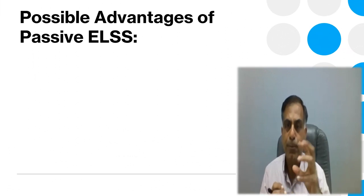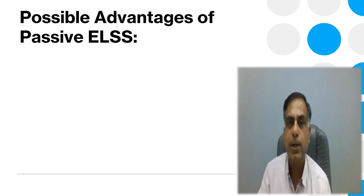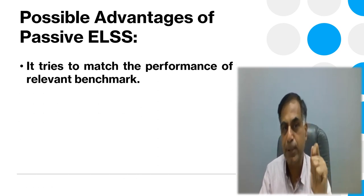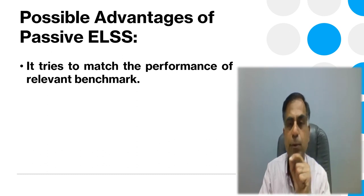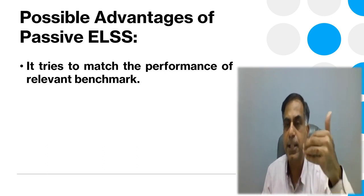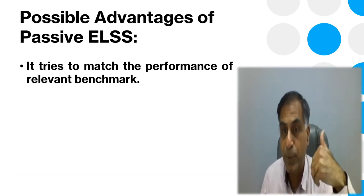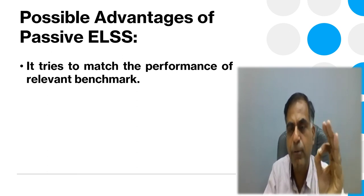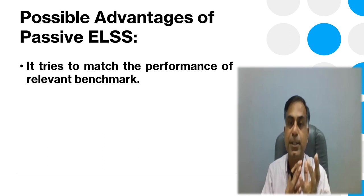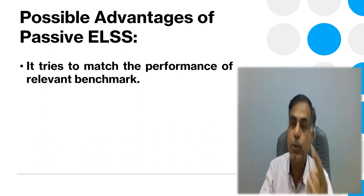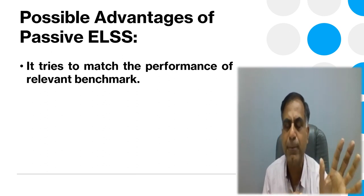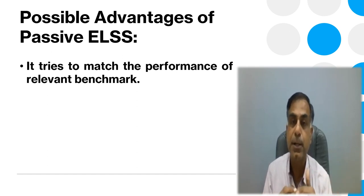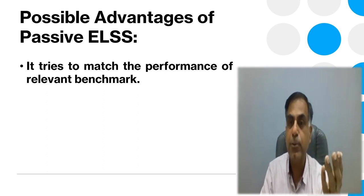Now I come to one more important discussion: what are the possible advantages of a passive ELSS? A passive ELSS tries to match the performance of the relevant benchmark. Rather than leaving performance at the discretion and intelligence of the fund manager, which involves human involvement, you simply go by tracking the relevant index. For somebody who is risk-averse, passive ELSS is better compared to active ELSS. As a layman investing in a mutual fund, if you are not focused on who the fund manager is or their past performance, it is better to straight away follow the benchmark — then passive ELSS is the right choice.